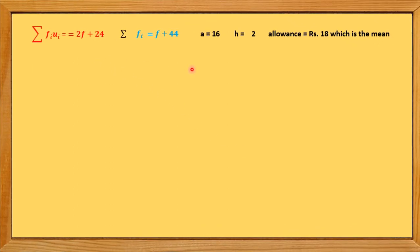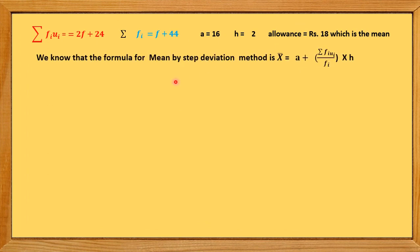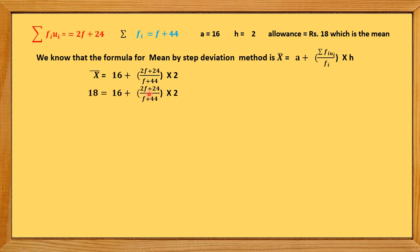Using the Step Deviation formula with mean x̄ = 18 (given), a = 16, h = 2: 18 = 16 + [(2f + 24) / (f + 44)] × 2. Transposing 16 to the left side gives 18 − 16 = [(2f + 24) / (f + 44)] × 2, so 2 = [(2f + 24) / (f + 44)] × 2.